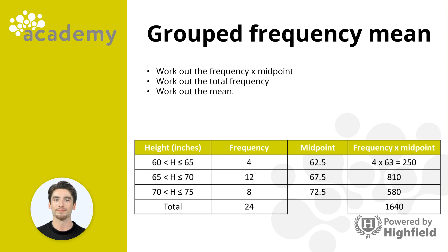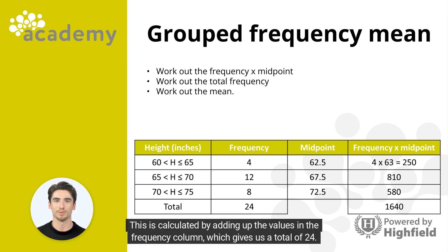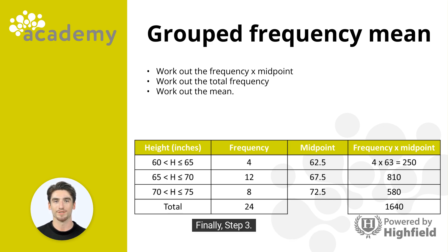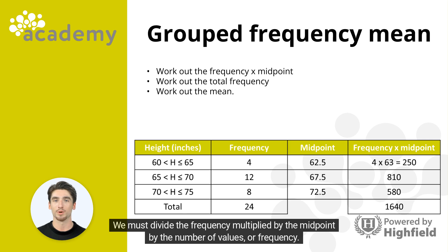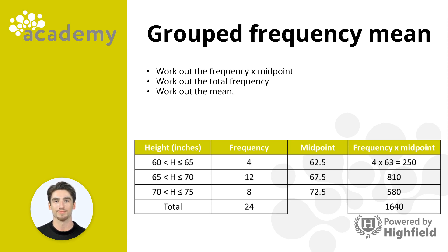Step 2: work out the total frequency. This is calculated by adding up the values in the frequency column, which gives a total of 24. Finally, Step 3: work out the mean by dividing the total frequency multiplied by the midpoint by the total frequency. 1640 divided by 24 gives us a mean of 68.33.